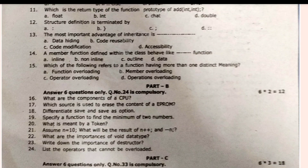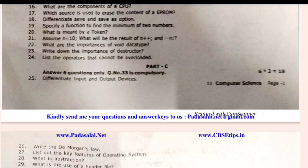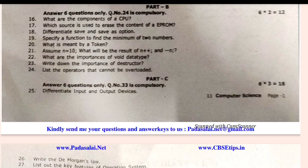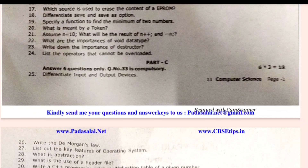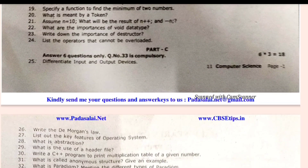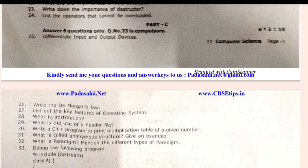Next is Part C — 3 marks. You will find 9 questions here: Differentiate input and output devices; write De Morgan's law; list the key features of an operating system; abstraction; use of header files; write a C++ program to print the multiplication table of a given number; what is an anonymous structure — give an example; debug the following program.